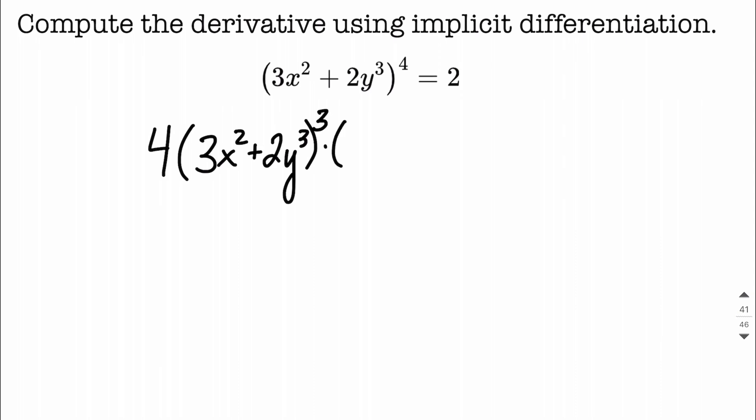But then next to this, we're going to have to multiply by the derivative of the inner function. Remember, implicit differentiation, we're taking the derivative with respect to x on each one of these inner pieces, the inner terms. So the derivative of 3x squared is going to work out to be 6x to the first power.